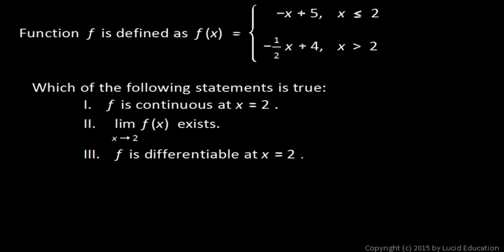In this problem, function f is defined as a piecewise function. f of x is negative x plus 5 if x is less than or equal to 2, and negative 1 half x plus 4 if x is greater than 2. And we're asked which of these statements is true. So let's look at these one at a time.